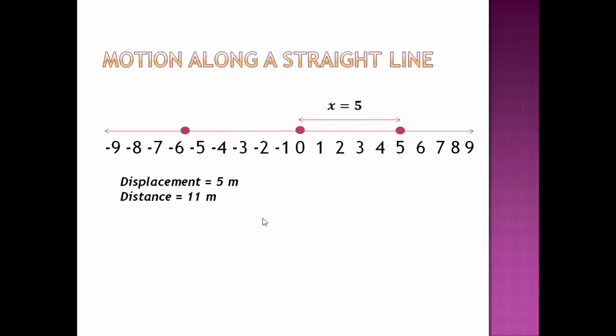Similarly if you have the motion along negative x direction, then again x will be minus 5 but distance will still be 11 meters. The distance you will not associate with the negative value. And displacement will be minus 5 meter that is x equals to minus 5. Here minus sign indicates the direction is along negative x axis.